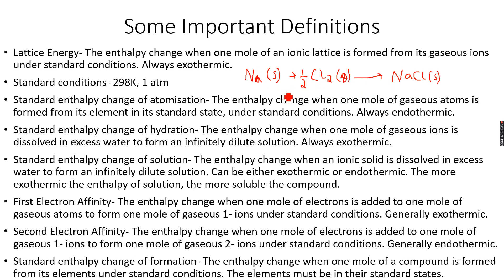So that covers all of the definitions. Before we proceed, let's understand something about electron affinity. Electron affinity is technically the opposite of ionization energy, because ionization energy involves removing one mole of electrons, whereas electron affinity involves adding them.